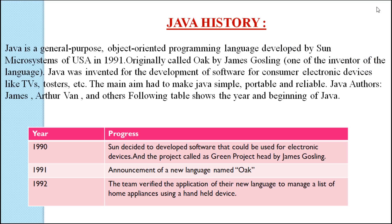Coming to Java History. Java is a general purpose object-oriented programming language developed by Sun Microsystems of US in 1991. It was originally called Oak by James Gosling, one of the inventors of the language.